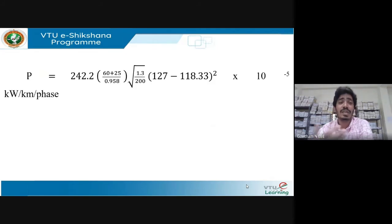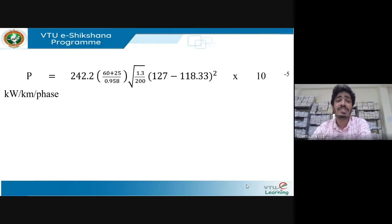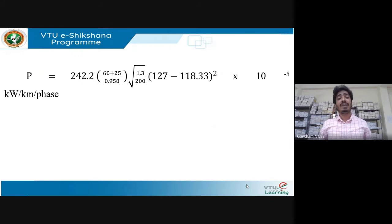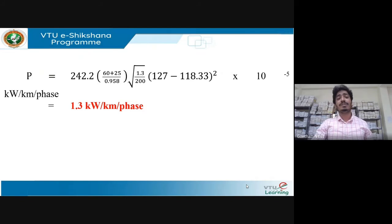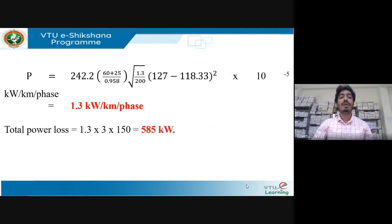By changing the diameter, we observe how V_c changes and consequently how corona power loss changes. The power loss becomes 1 kW per kilometer per phase — a significant change. The total power loss for three phases over 150 km corresponds to 585 kilowatts, which is much higher than the previous case.